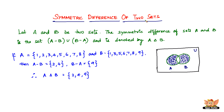The symmetric difference A△B is nothing but (A minus B) union (B minus A). A minus B contains the elements belonging only to A: 2 and 4, since all other elements of A also belong to B. B minus A contains the elements belonging only to B: 9, since everything else in B also belongs to A. Therefore, A minus B = {2, 4} and B minus A = {9}, so A△B = {2, 4, 9}.